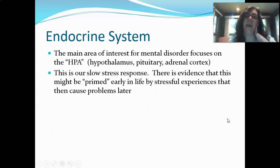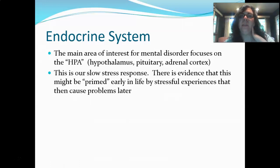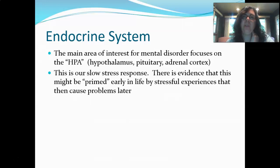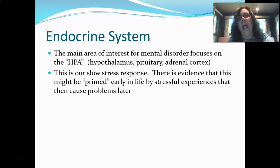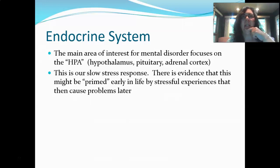Now let's think about the endocrine system. I pointed out the hypothalamus when we were looking at the limbic system. The endocrine system is going to be important to us in lots of ways, but most interesting is the long-term stress response. The hypothalamus, pituitary, and adrenal cortex form the HPA axis — our slow stress response — involved with the release of cortisol. People can be primed early in life by stressful experiences so that their HPA system responds differently; their body is less good at turning off that stress response and better at keeping it going.